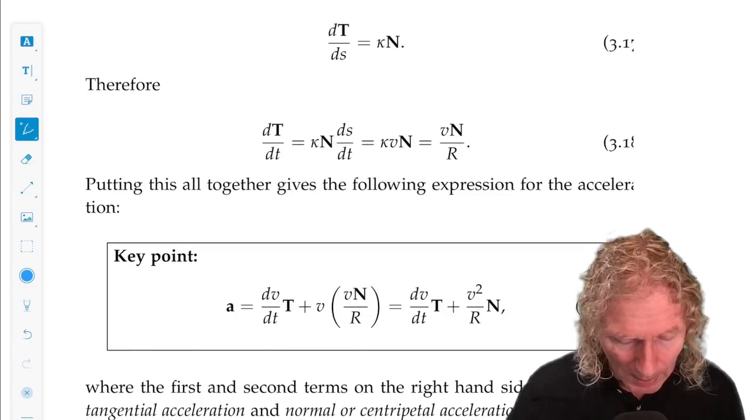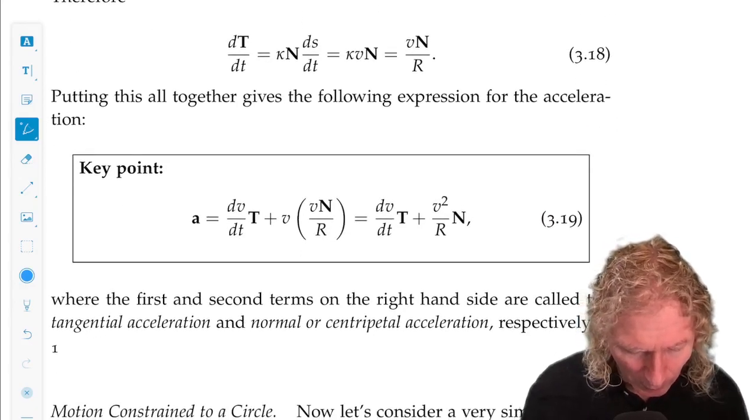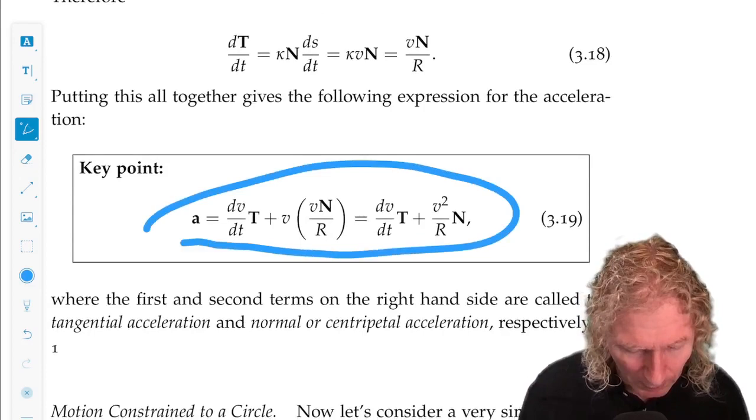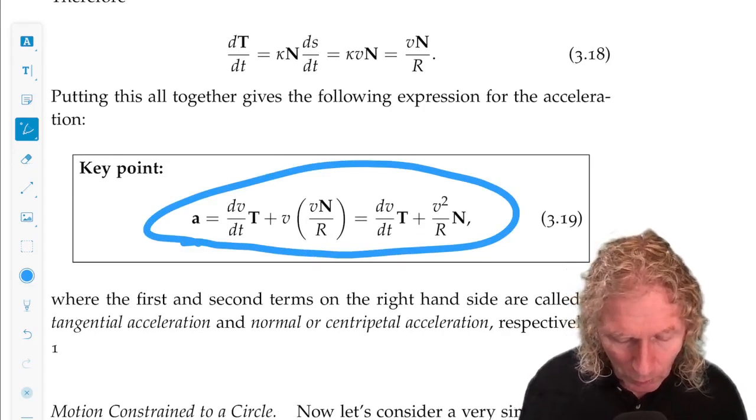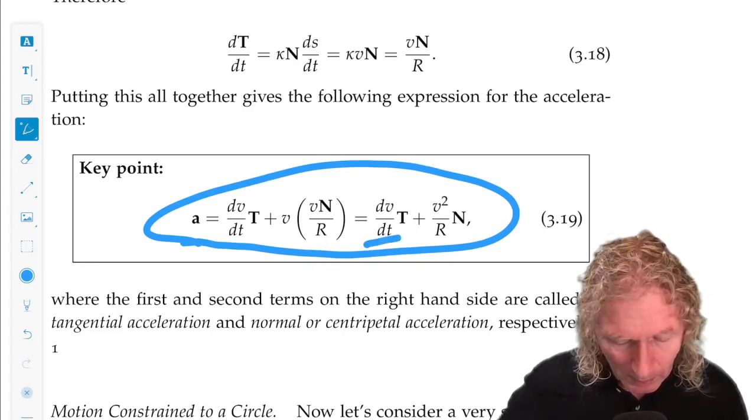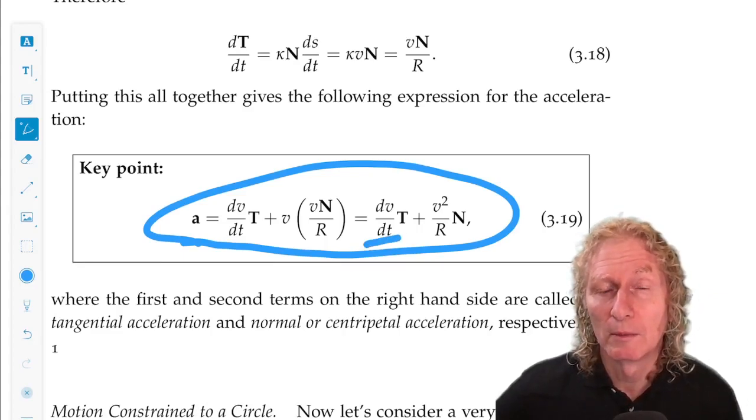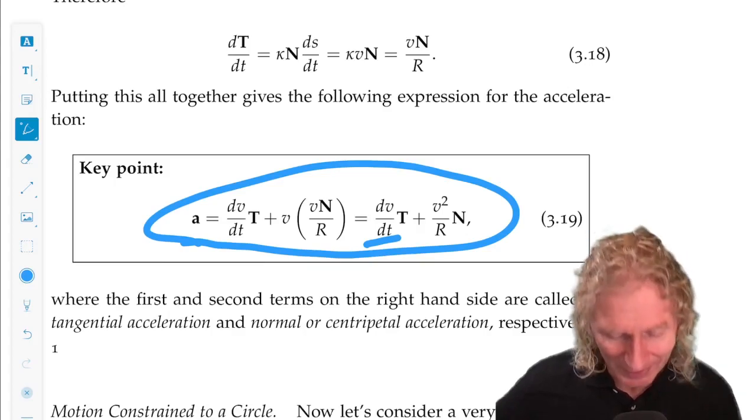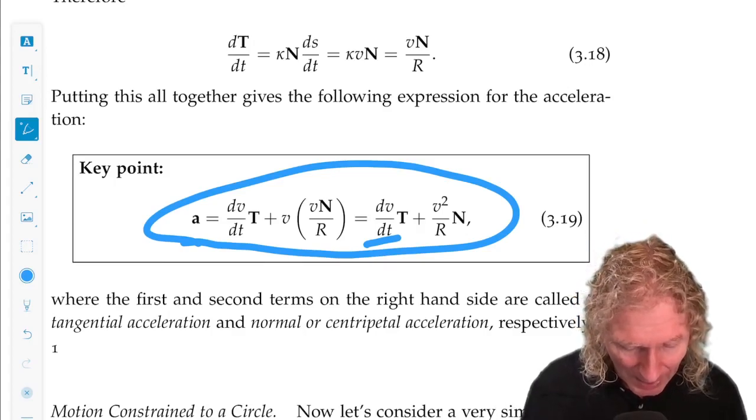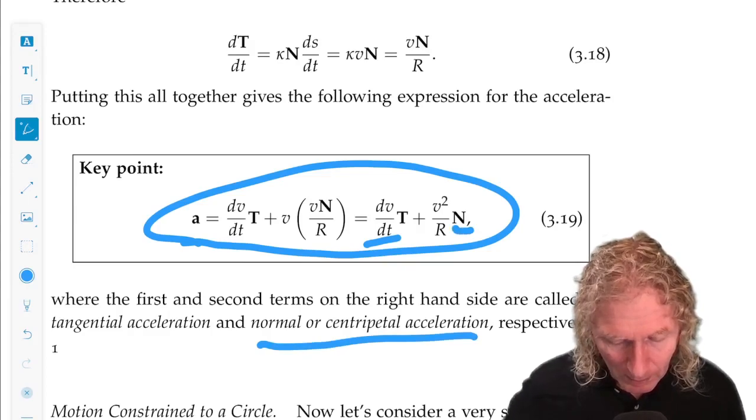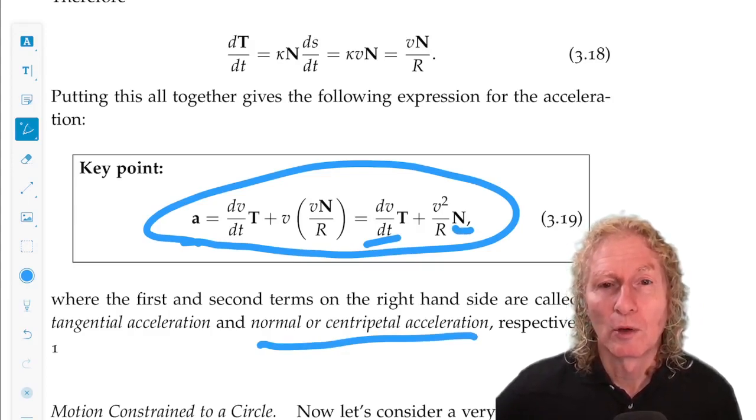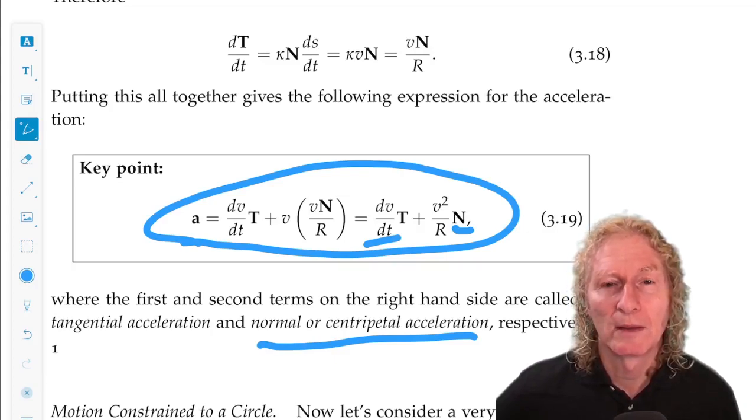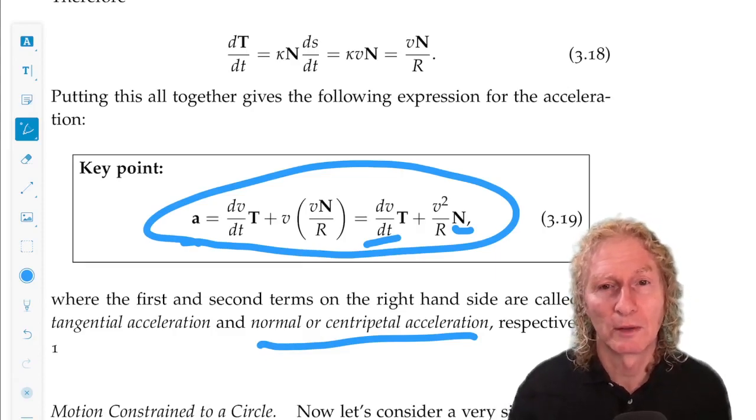We end, and putting everything together, we end up with this expression, a little more complicated in the velocity for the acceleration. So it has two components. A tangential acceleration, and a component multiplying the normal vector, principal normal, and that's called the normal or centripetal acceleration.